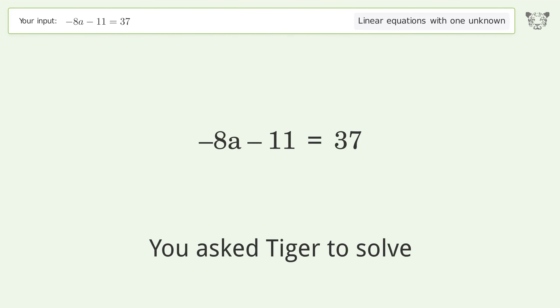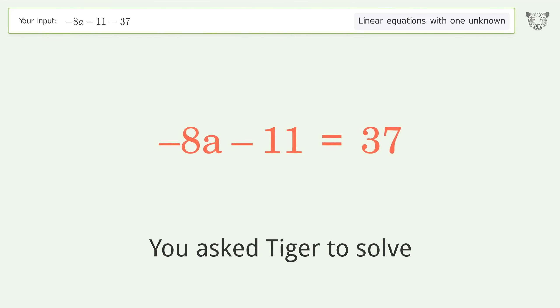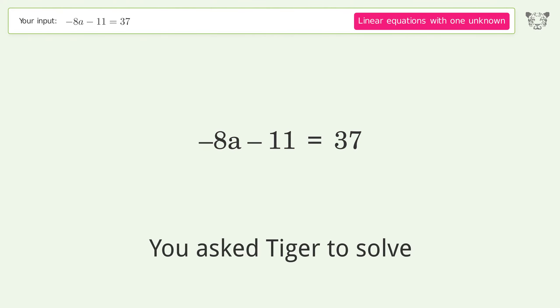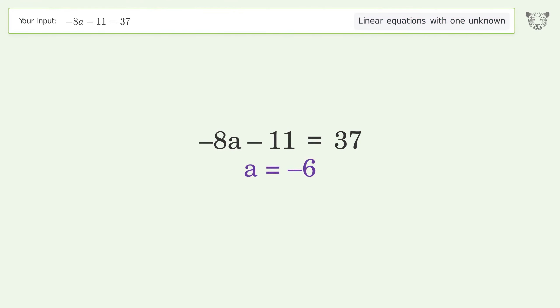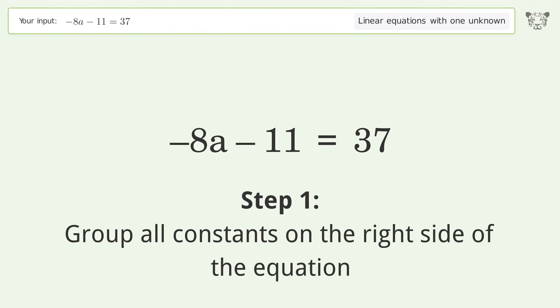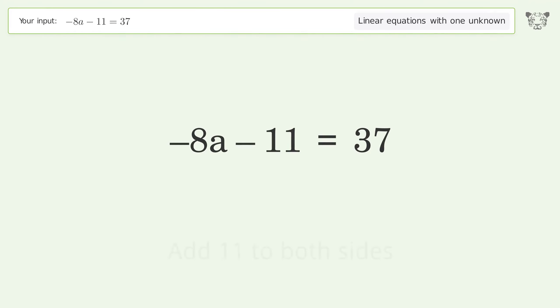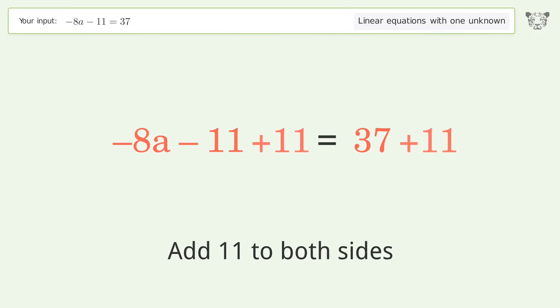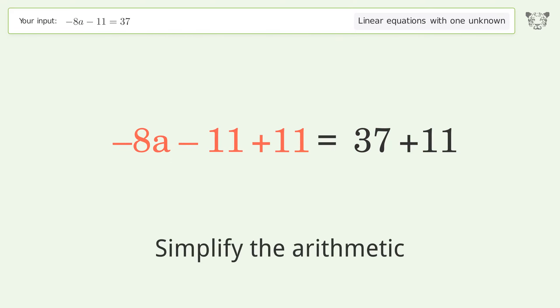Tiger Algebra solves this linear equation with one unknown. The final result is a equals negative 6. Let's solve it step by step. Group all constants on the right side of the equation — add 11 to both sides, then simplify the arithmetic.